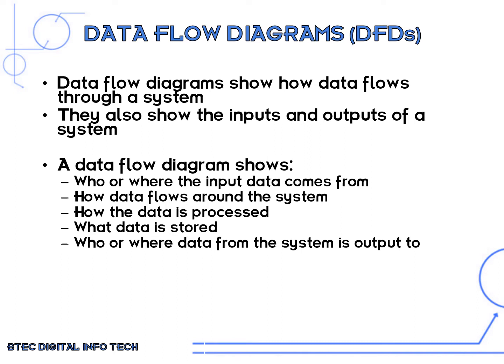Data flow diagrams show how data flows through a system. They also show the inputs and outputs of a system. They specifically show who and where the input data comes from, how data flows around the system, how the data is processed, what data is stored, and who or where the system outputs to.